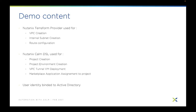This is the content of the demo. I will first use the Terraform provider to set up VPC, internal subnet, and route configuration, and then we will use the Nutanix CALM DSL to create the CALM project, the CALM environment, to deploy the VPC tunnel, and finally to publish the marketplace to the project that we've just created.